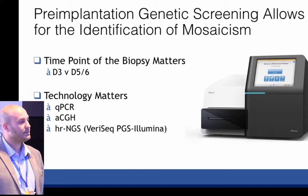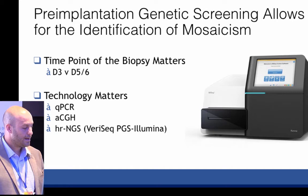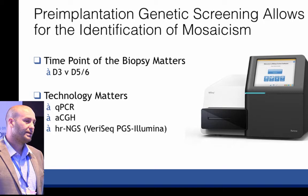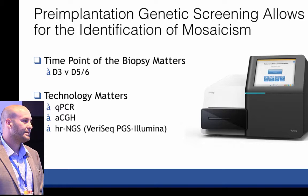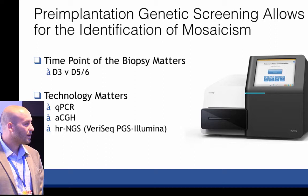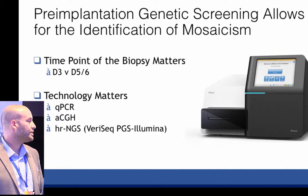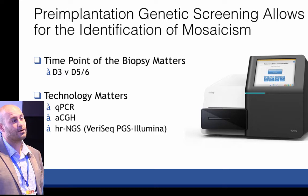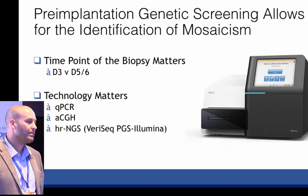Technology also matters. QPCR for PGS is a lower-resolution technology where you can't necessarily see mosaicism. ACGH is a very good technology and you can see mosaicism, but there is a lot of variation in the assay. Certain technical aspects can fluctuate the quality of the data, so if you have a good run you might see mosaicism very clearly, but with a poorer run it's a lot harder to distinguish. With high-resolution NGS, you get a lot more data. The protocol is much more robust, much less variation. You're not comparing to a reference hybridization — you're comparing to the human genome, and so it allows for a much better look at what's actually going on in these biopsies.